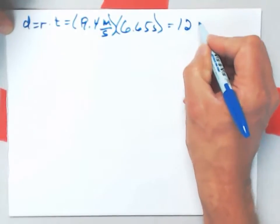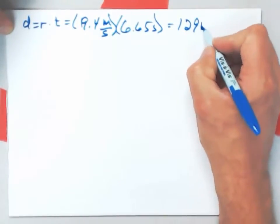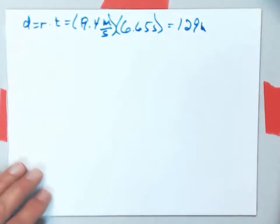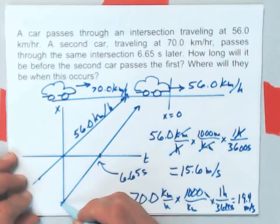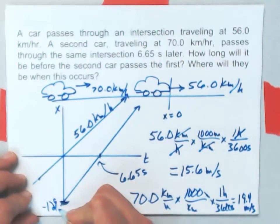And it was 129 meters behind the intersection. That means this number right down here is minus 129 meters.